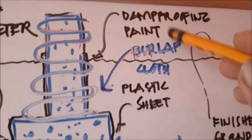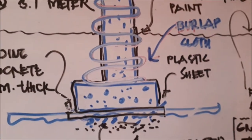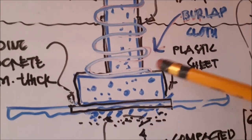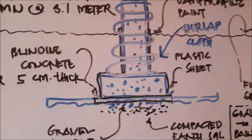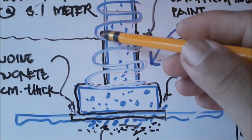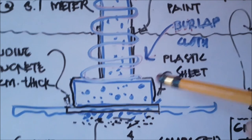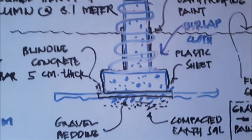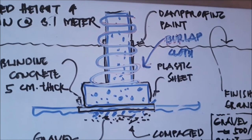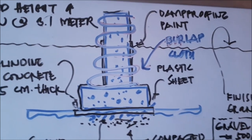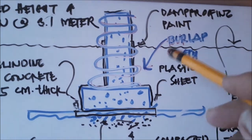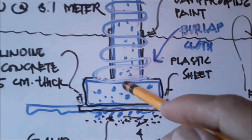After ng footing and column, pipintuan lang po yan ng damp roofing paint para hindi mag-filtrate ang moisture galing sa lupa papasok sa ating gabayan at structure. Malaga po yan — pipintuan lang natin ng black. Ang isang galon ay around 1,000 pesos — kayang-kaya po yan. Kung kulang, kumuha lang ng isa pang can ng damp roofing para protektado ang ating structure.